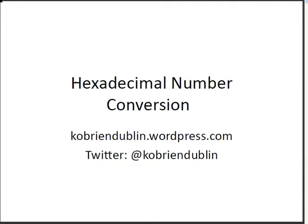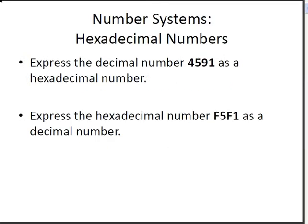In this presentation, we're going to look at hexadecimal number conversion — converting from decimal to hexadecimal, and likewise from hexadecimal to decimal. The numbers we're going to use as examples are: express the decimal number 4591 as a hexadecimal number, and express the hexadecimal number F5F1 as a decimal number.